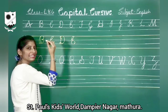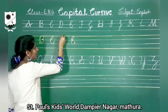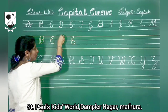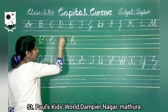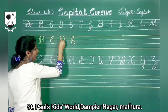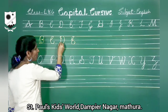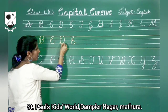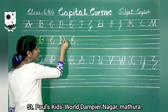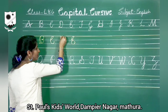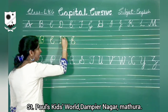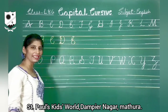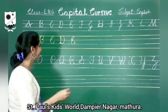Now capital D. We will start from the first line. Look here. Standing line. Take a small loop, round and then curve and leave it. Capital D.